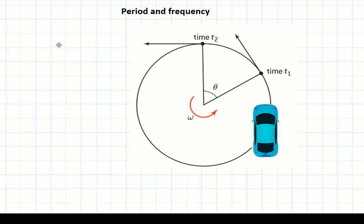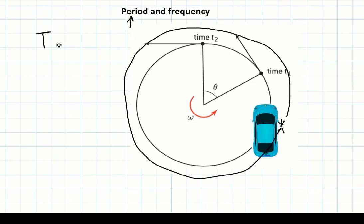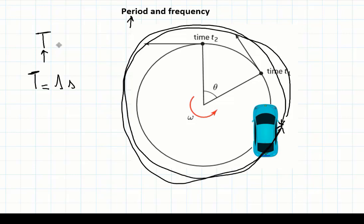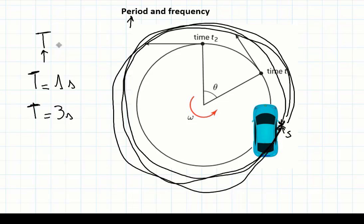Now let's link the angular speed with the period. The period, denoted as T, is the time it takes to complete one full circle. For example, suppose a car is traveling around a circle — the time it takes to complete one full loop is the period. If the period is one second, the car completes one circle in one second. If it's three seconds, it takes three seconds to complete one cycle. That is the definition of the period.